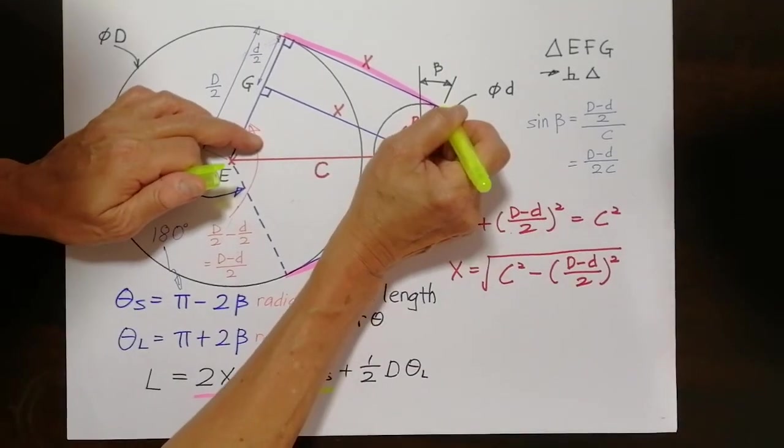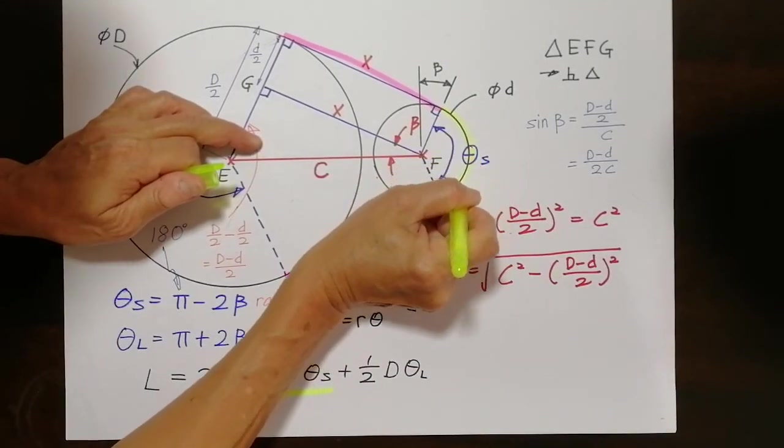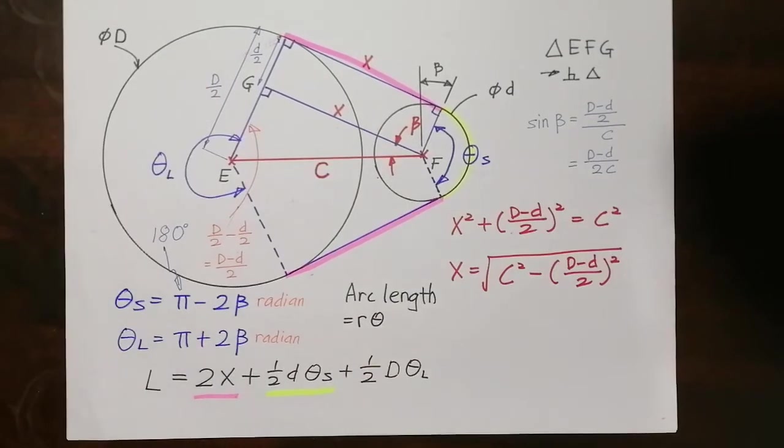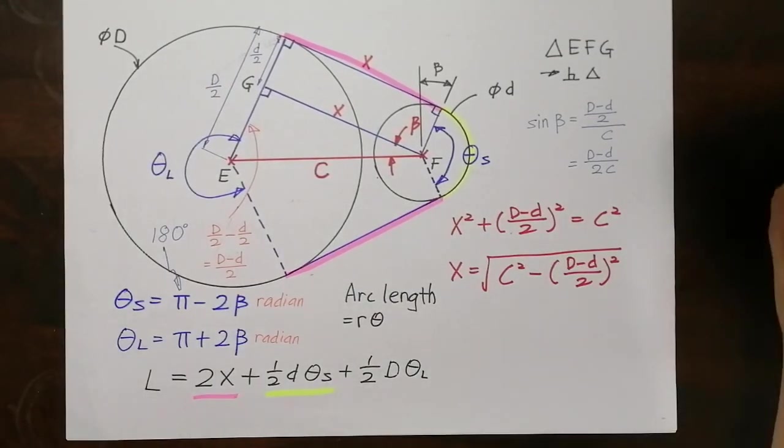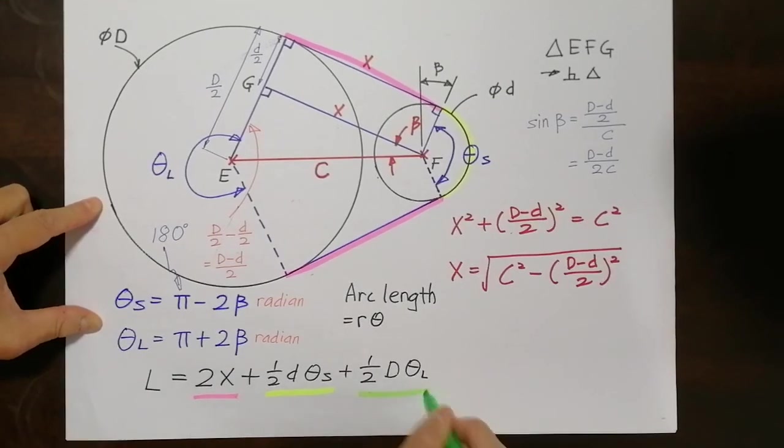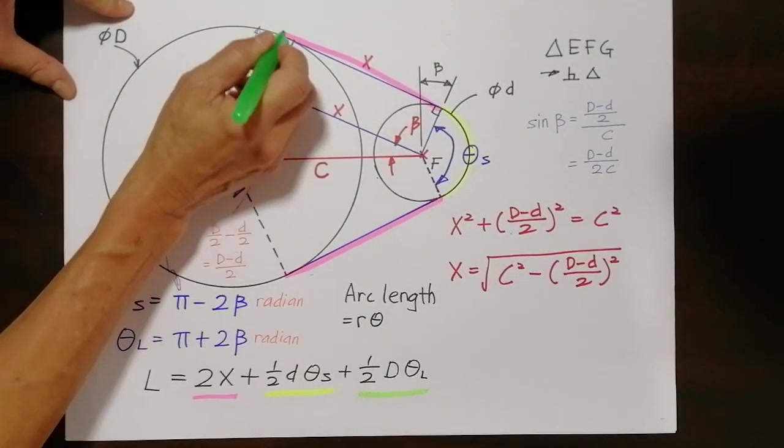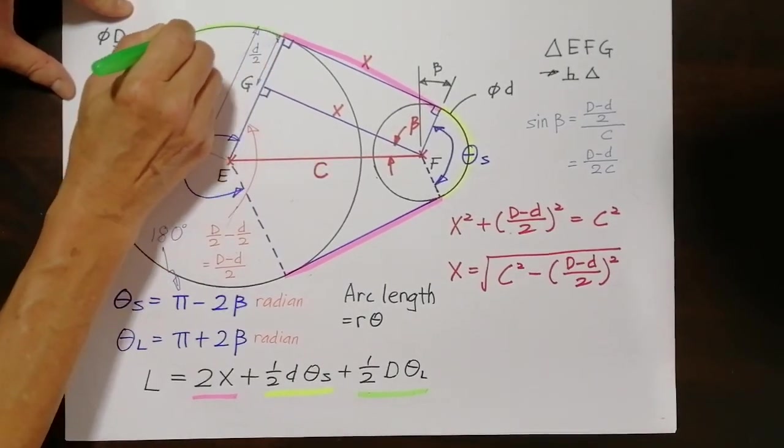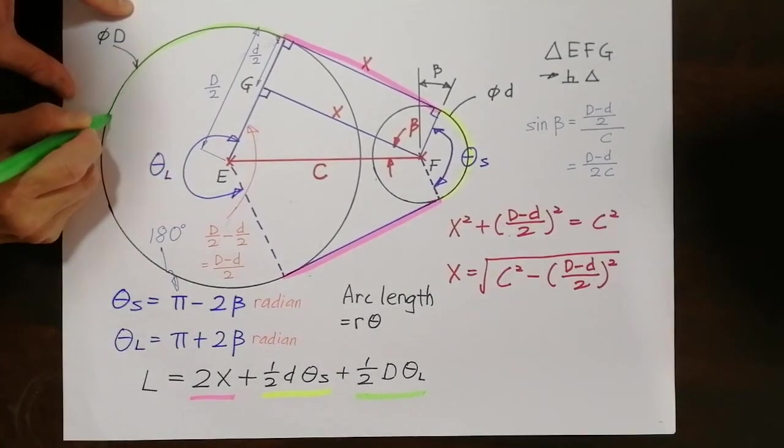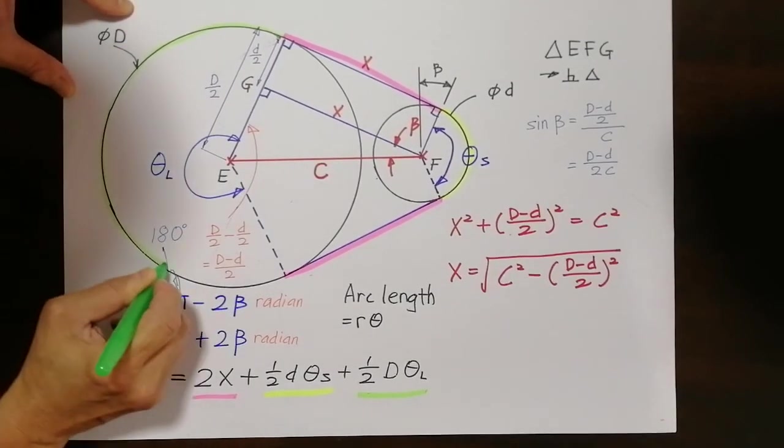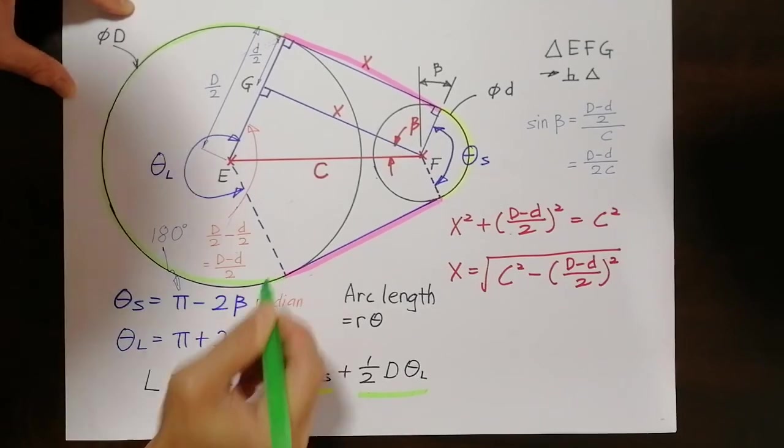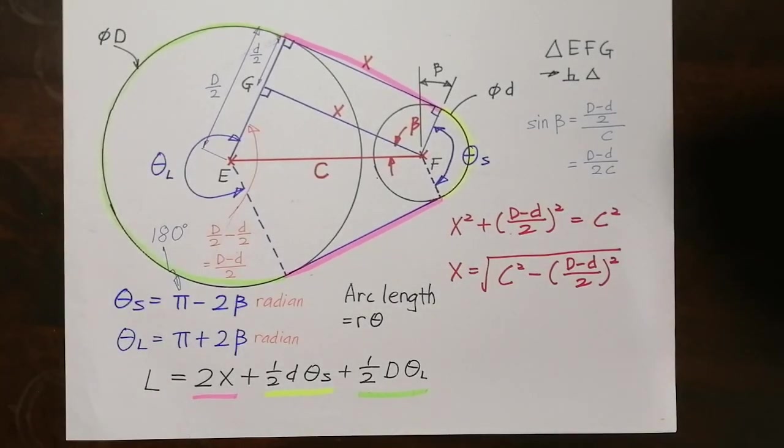And finally the half D theta L, I'm going to use green color. This is the large one. It will be this distance. And that in total will bring us to how to apply this formula in the next video. Thank you.